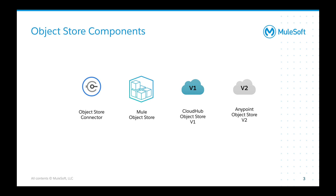To start off, object stores within MuleSoft have a couple of components that make up the concept. You have the object store connector, which is found in AnyPoint Studio, that allows you to take data you want to store in memory in a key-value format and store that either to the worker itself, an on-prem Mule runtime, CloudHub object store version 1, or AnyPoint object store V2. I'll go over the differences between V1 and V2 during this presentation.